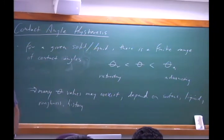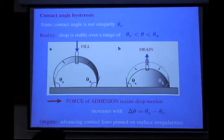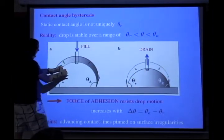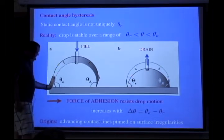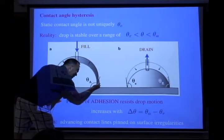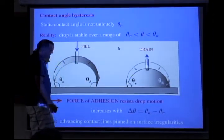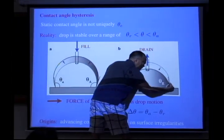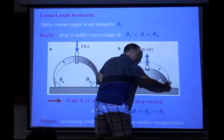If you take a fluid drop and pump fluid in, and if you believe there is a unique equilibrium contact angle, the contact line remains pinned as you fill the drop. The static contact angle increases until it reaches the advancing angle, and then the contact line starts moving. Similarly, if you draw fluid out, the static contact angle decreases until reaching the retreating value, and then the contact line starts moving.